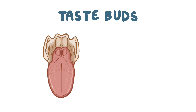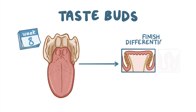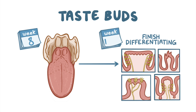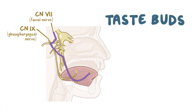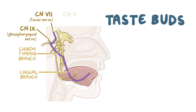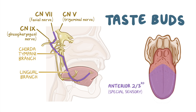As a final touch, the taste buds start to sprout over the surface of the tongue around week 8 and finish differentiating into the different types around week 11 to week 13. Cranial nerves 7 (the facial nerve) and 9 (the glossopharyngeal nerve) innervate the taste buds. The contribution of cranial nerve 7 is facilitated by its chorda tympani branch, which joins with the lingual branch of the mandibular division of the trigeminal nerve, carrying afferent special sensation of the anterior two-thirds of the tongue. The posterior one-third special sensory component is carried by cranial nerve 9.